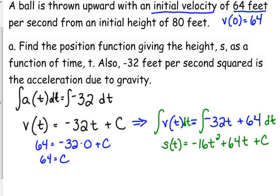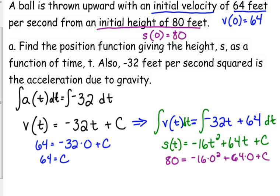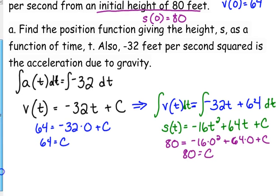Last step. We've got to solve for that last C. We are told that we have an initial height of 80 feet. So S of 0 is 80. So we set this equal to 80. Plug in 0 for T. Well, that's nice and convenient. That just ends up saying 80 is our C.